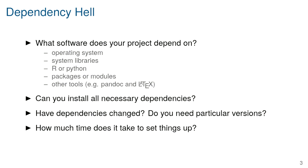Dependencies include things like the particular operating system you're using, whether any aspect of your code requires matching system libraries — numerical or scientific libraries — the particular version of R or Python, all the sets of packages or modules you're using, and what other tools you're relying on. For example, if you're making a PDF using R Markdown, the user will need not only pandoc installed but also LaTeX, which can be quite a bear.